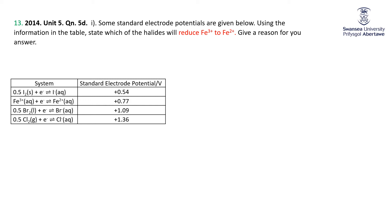We're moving into looking at half equations and their potential, and then putting those half equations together to make a whole equation and looking at the overall cell potential. What we're looking for here is that a positive potential means the process is spontaneous or feasible, and a negative potential means it's non-spontaneous or non-feasible.